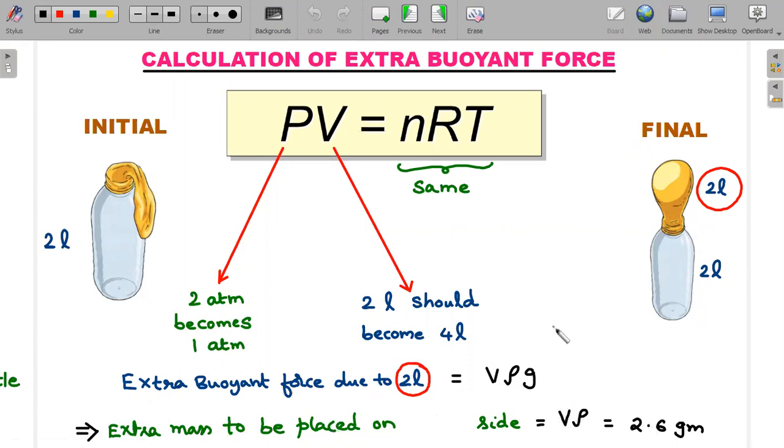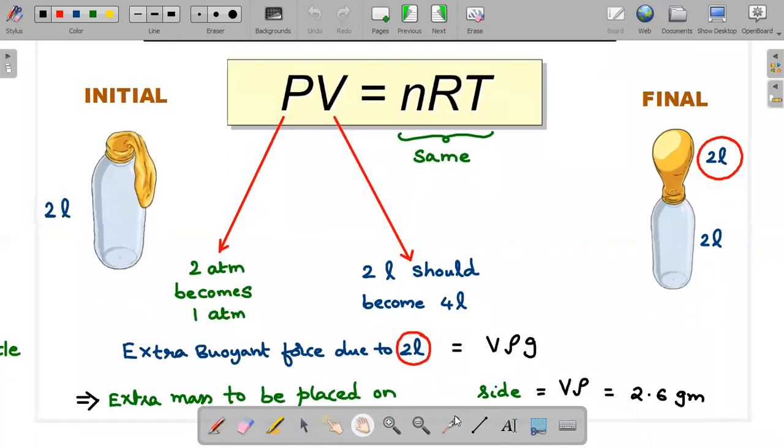One more important and interesting thing here is on which side you should adjust the weight. Since the buoyant force occurs on the bottle side, that side becomes lighter. So whatever extra weight that he has asked in the question should be placed on the bottle side, not on the weight side. Already the weight side is larger, so you're supposed to actually place the weight on this side, left side.